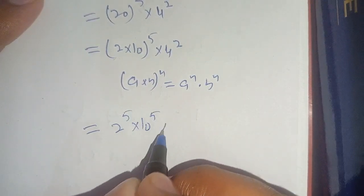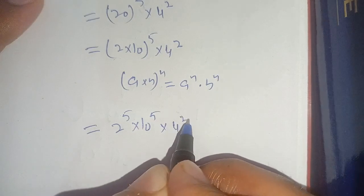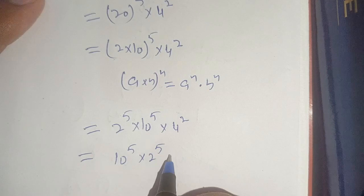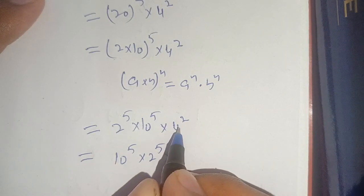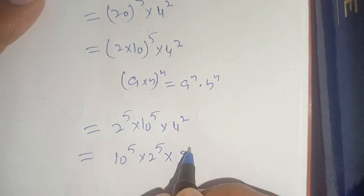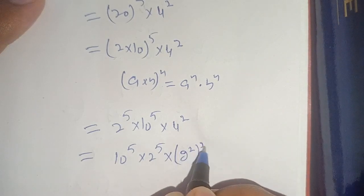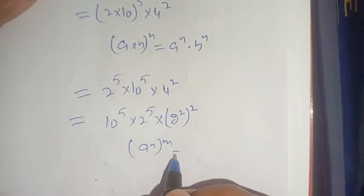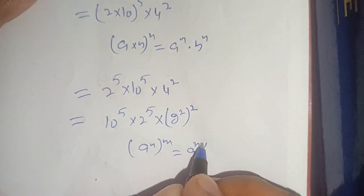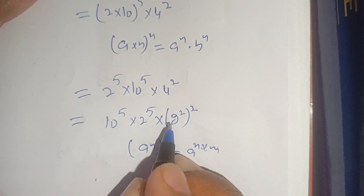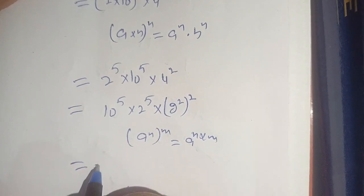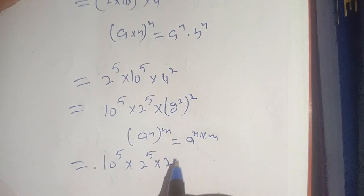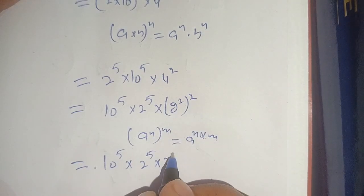Applying this identity, we get 2 raised to power 5 times 10 raised to power 5 times 4 raised to power 2. Since 4 can be written as 2 raised to power 2, we have 4 raised to power 2 equal to (2 squared) raised to power 2. Using the identity (a raised to power n) raised to power m equals a raised to power n times m, this gives 2 raised to power 4.